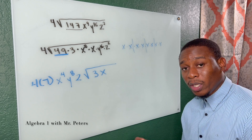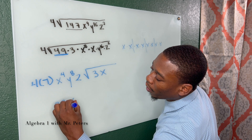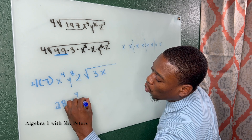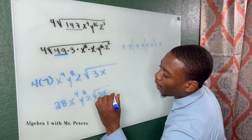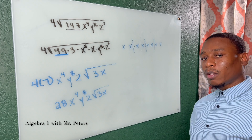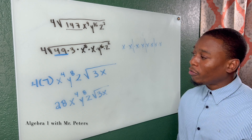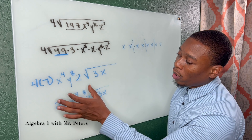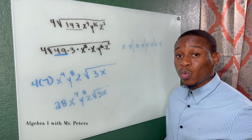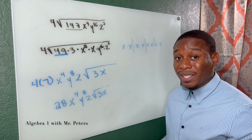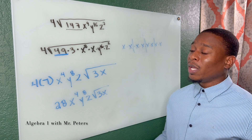Cleaning up the problem: we have 4 times 7 times x⁴ times y⁸ times z, multiplied by the radical containing 3x. The final simplified answer is 28x⁴y⁸z times √(3x). It gets a little tricky with variables, but remember we're looking for pairs because that is what a perfect square is — multiplying the same number by itself.